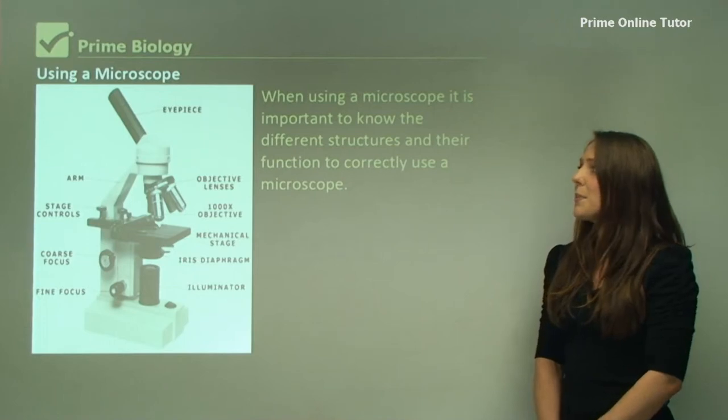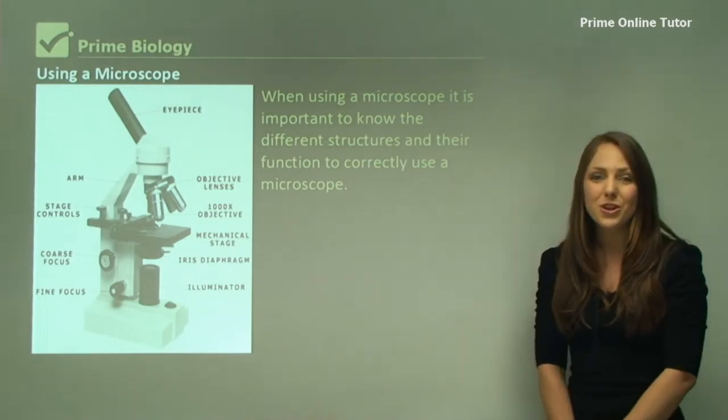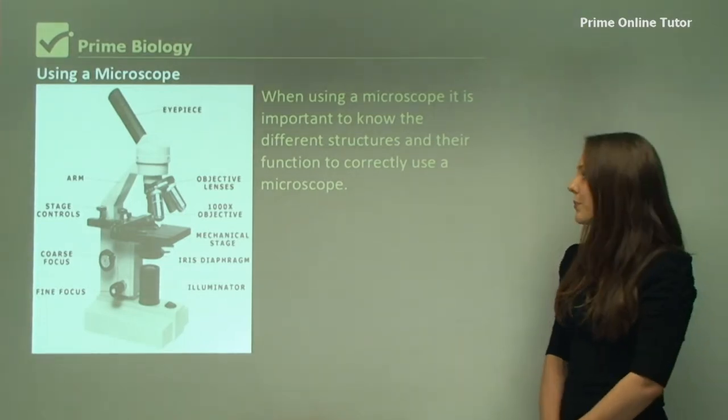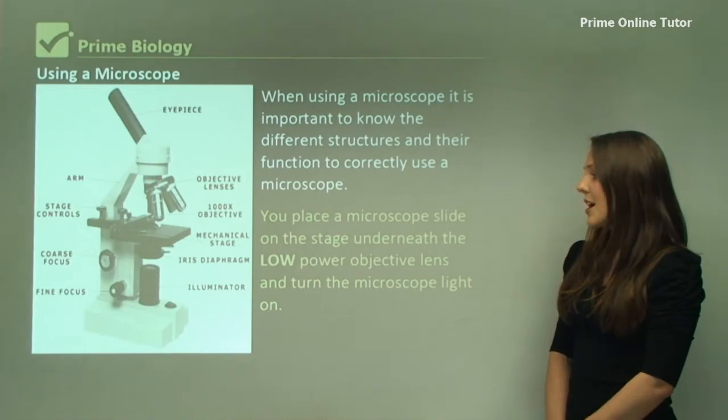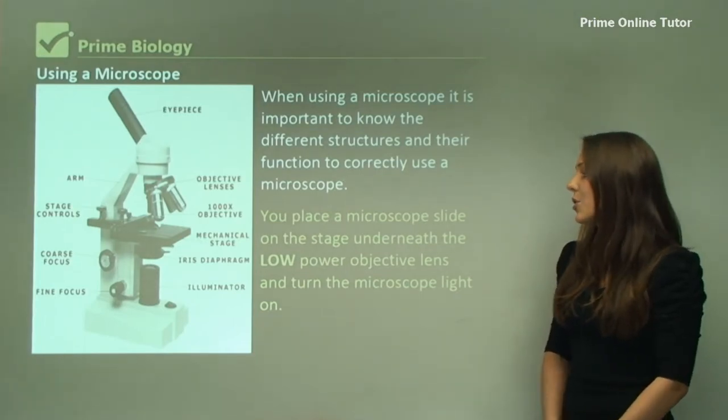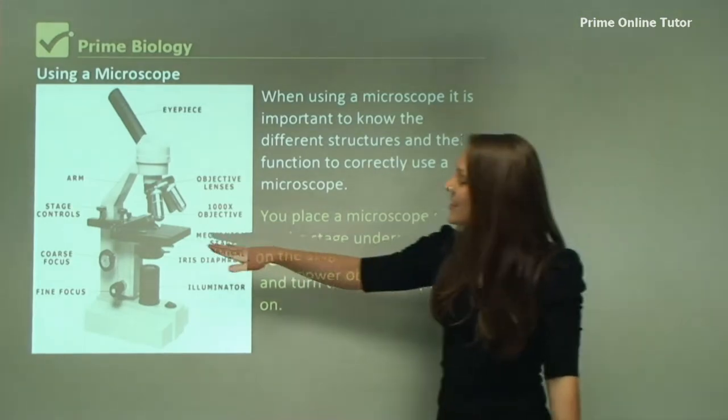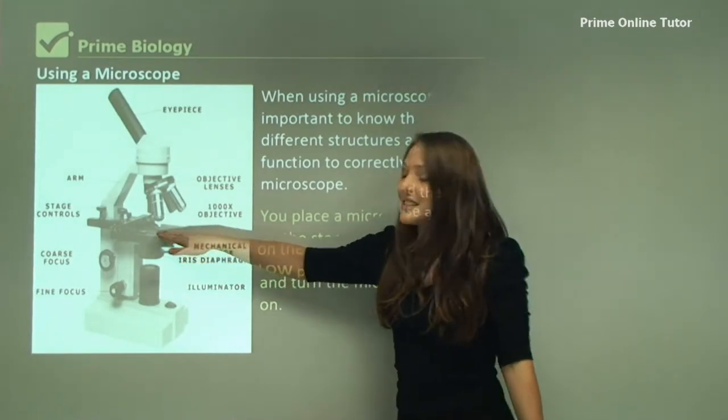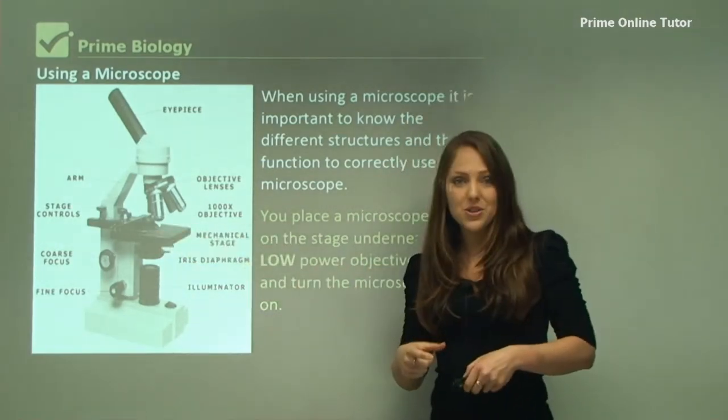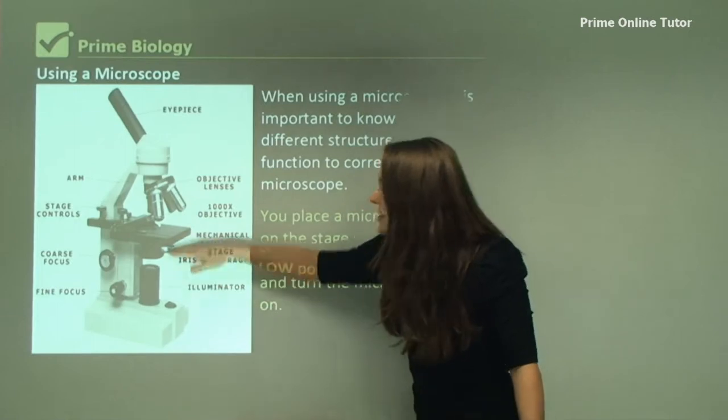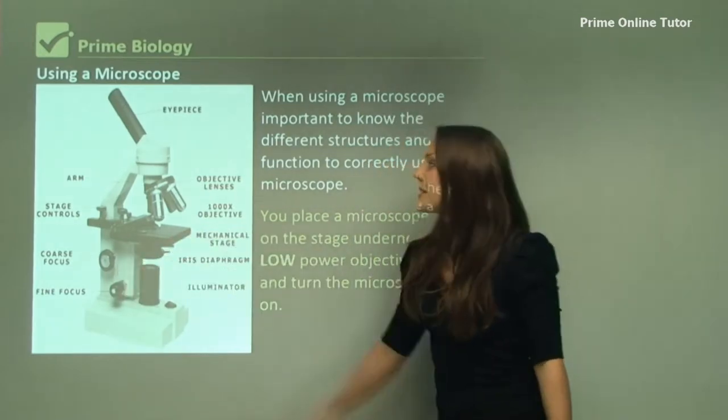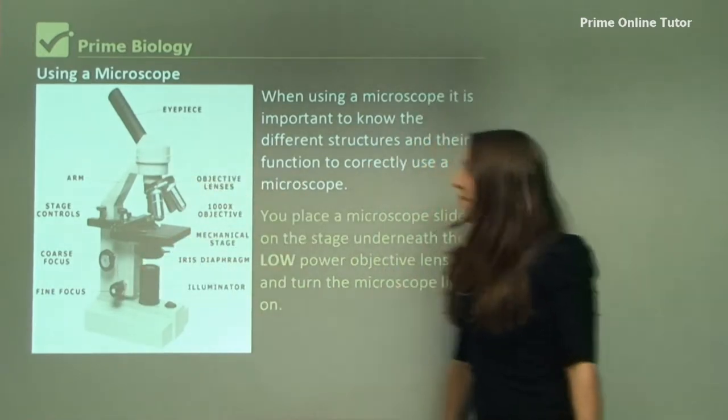When using a microscope, it is important to know the different structures of the actual microscope. You place a microscope slide on the stage underneath the low power objective lens. This here is the stage, and that's the platform where you can put your microscope slide. You can move this stage with the coarse focus, and you look through the eyepiece lens.